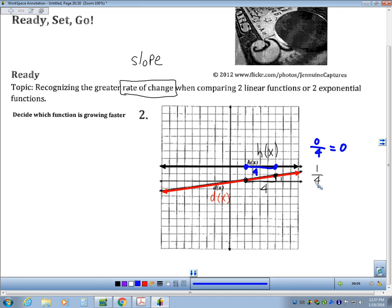It has a slope of zero. And so the d of x function has a larger value. One-fourth is larger than zero, right? So one-fourth is greater than zero. So which is growing faster? The function called d of x.